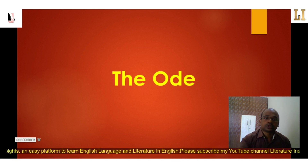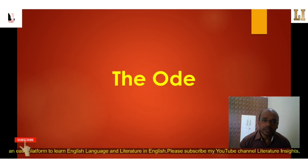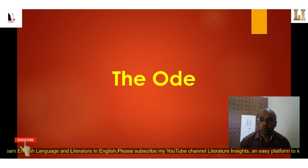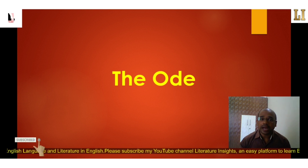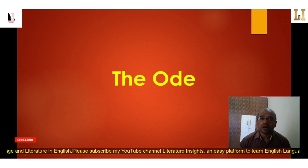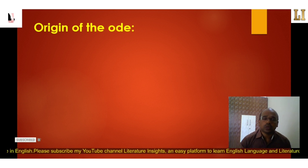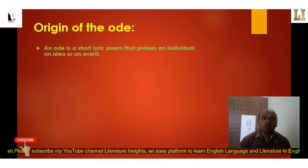Now in this tutorial, I am going to explain another major form of poetry in English literature: the ode. I will cover some major points such as the origin of the ode, features of the ode, structure of the ode, and types of the ode. Let's begin with the first point — origin of the ode.